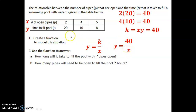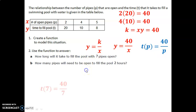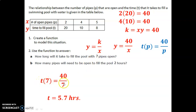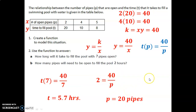We rewrite the model using the problem variables t and p, so instead of y we write t of p — the time it takes to fill the pool based on the number of pipes open. For part a, with 7 pipes open, substituting 7 gives 5.7 hours. For part b, if it takes 2 hours, we substitute 2 for time and solve for pipes, which works out to 20 pipes.